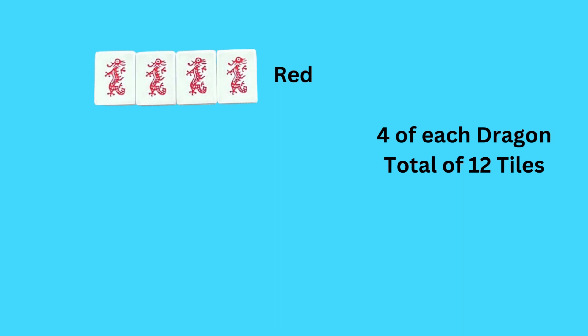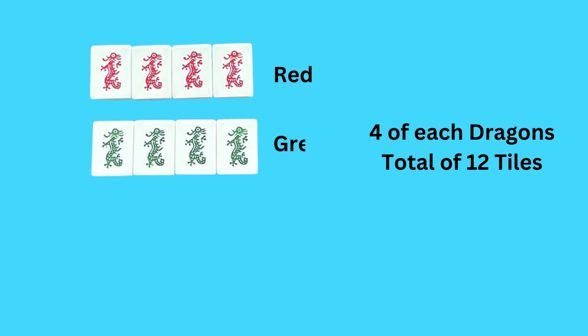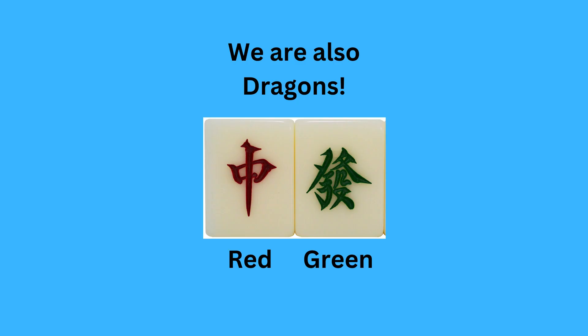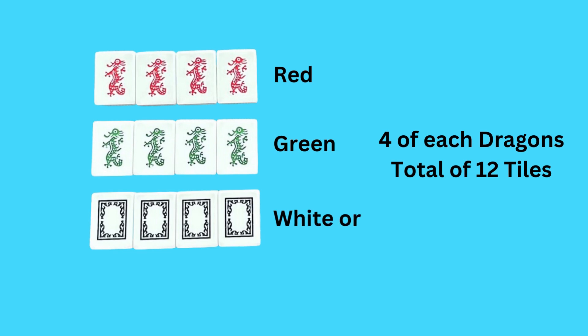Now we go on and learn about our dragon tiles. The first here are our reds, and they look very much like a red dragon. We have four of each of these. Then we have our green dragons — these are green in color and they look very much like a dragon. I do want to mention that the red and green dragons don't always look like dragons in every Mahjong set. In some sets, these red and green dragons look like Chinese characters.